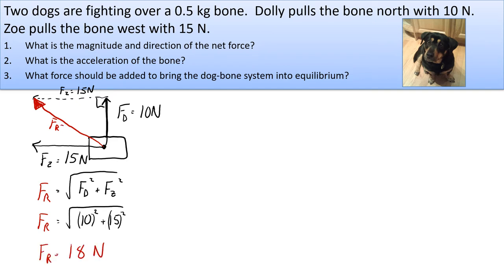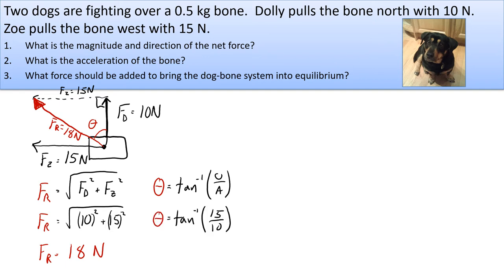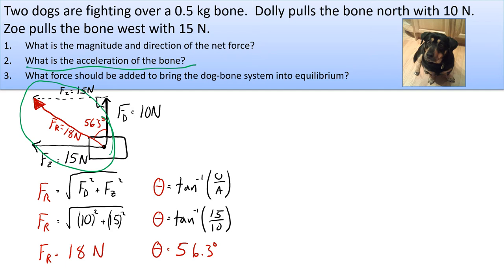When you combine both forces, they're pulling the bone with 18 newtons in a diagonal direction. So we have to find the direction. We'll use the inverse tangent with these two sides of the triangle, and solving gives us an angle of 56.3 degrees. Now that we know the net force, we use this resultant force to find the acceleration of the bone — the two forces together are causing that acceleration — using Newton's second law, F equals MA.